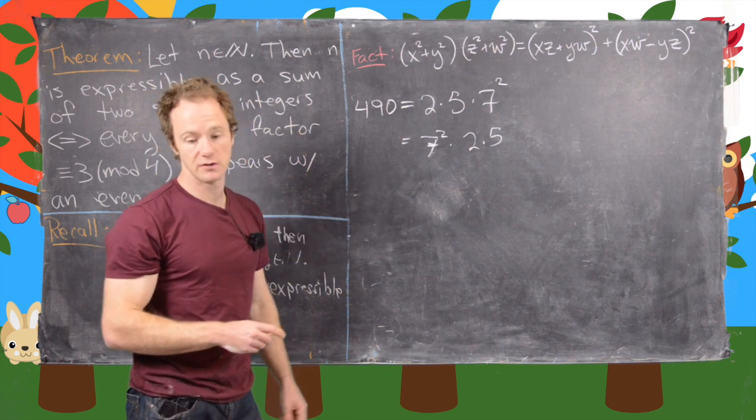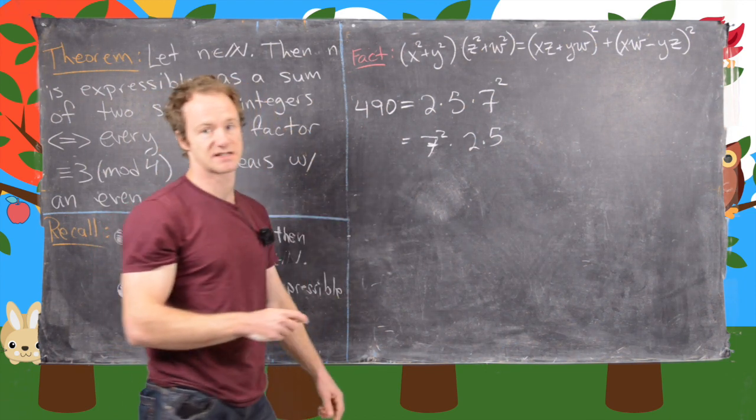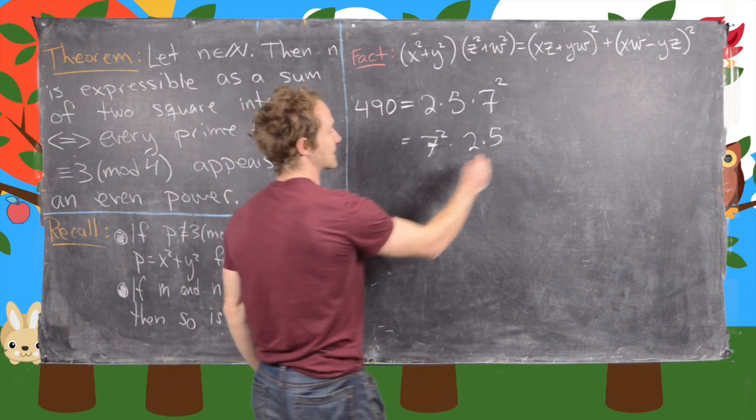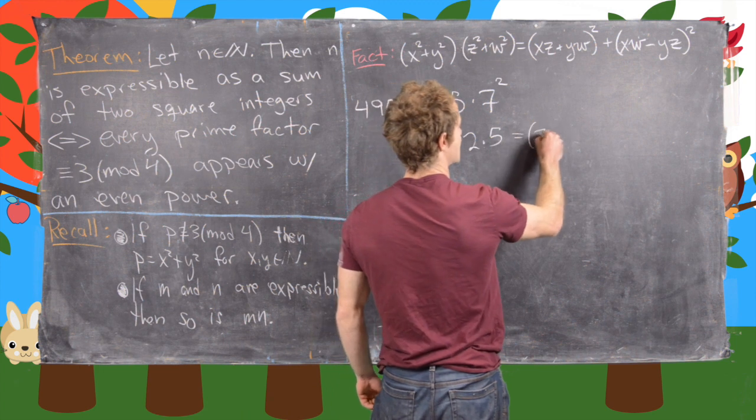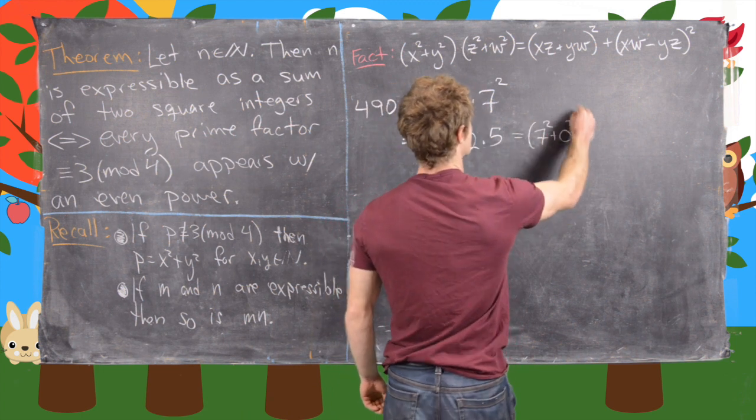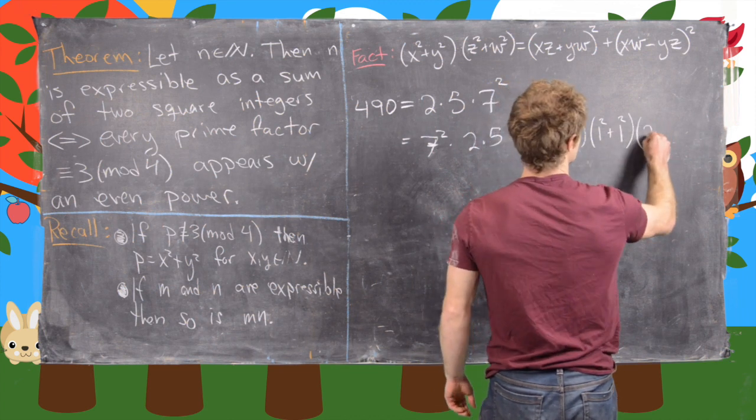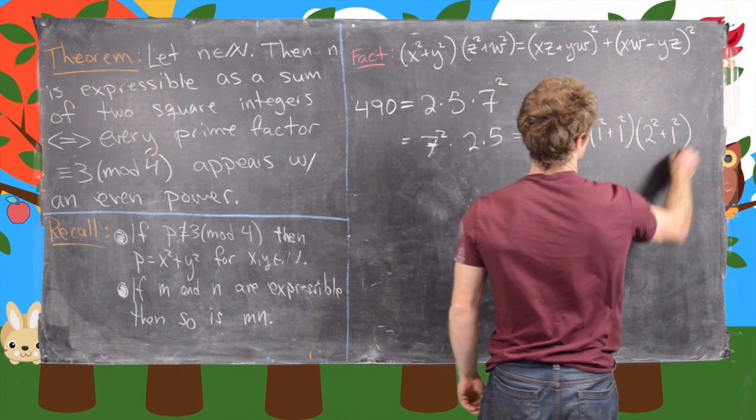So now what we can do is write each of these as sums of squares, which we're guaranteed to be able to do by this theorem. So that gives us 7 squared plus 0 squared. Here we have 1 squared plus 1 squared. And finally, here we have 2 squared plus 1 squared.